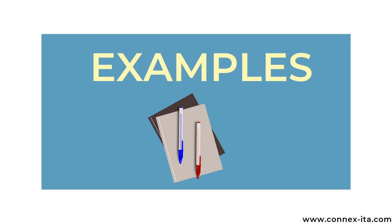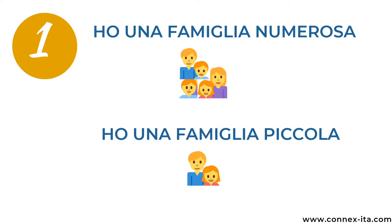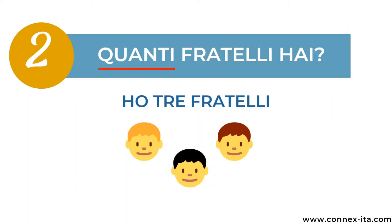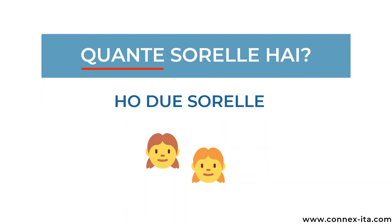And now we can finally look at some popular phrases to talk about your family in Italian. The first is about the size of your family — if it's a big one you can say Ho una famiglia numerosa, where numerosa means big. If your family is small then you'll say Ho una famiglia piccola, where piccola is the opposite of big. To ask how many brothers someone has you say Quanti fratelli hai?, and then you reply Ho plus the number, for example Ho tre fratelli. For sisters, quanti becomes quante: Quante sorelle hai? — Ho due sorelle.